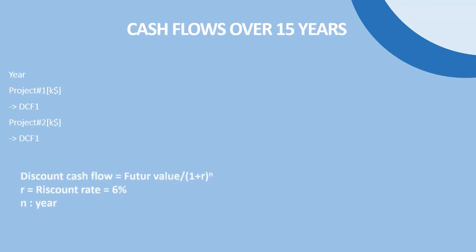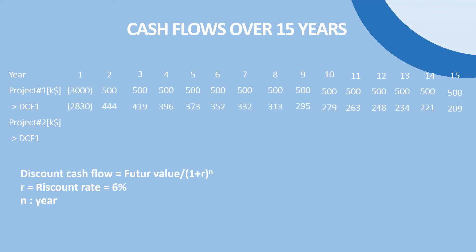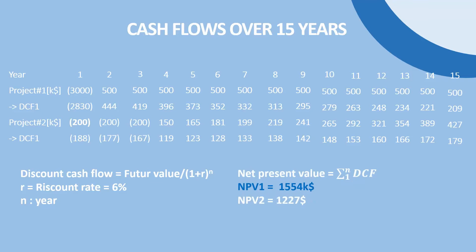Those numbers are just supporting our decision-making process and we can play with them and be more creative to come up with new options. For example, you can calculate the net present value over the next 15 years instead of 10 years. Let's extend our table to 15 columns and keep the same conditions — half a million dollars per year for project 1 and 10% growth rate for project 2. As you see, project 1 now becomes more advantageous.